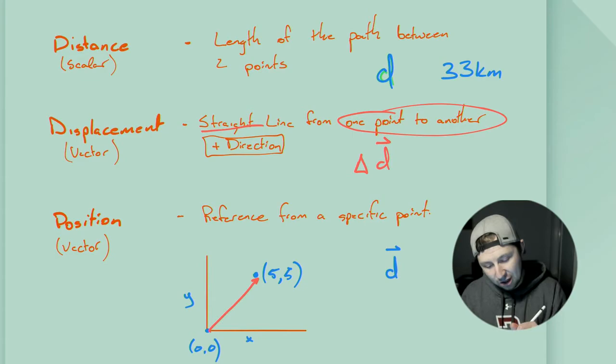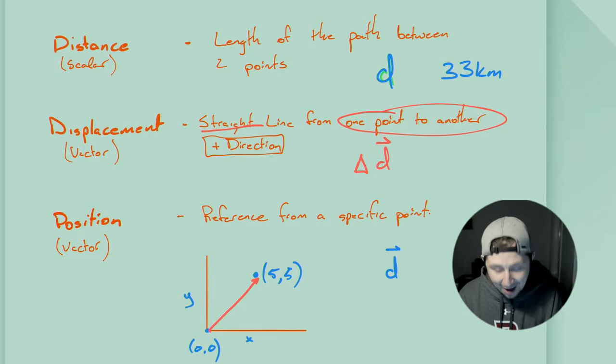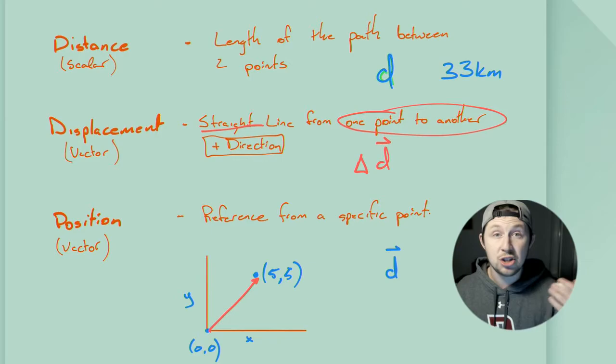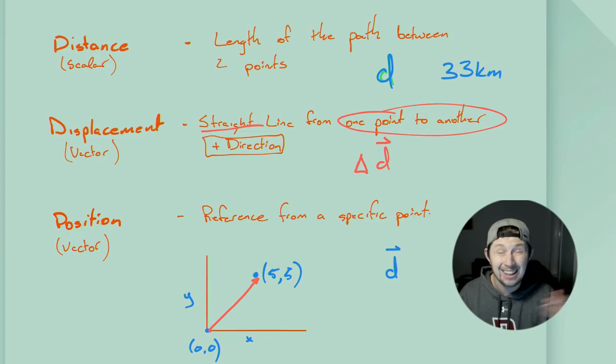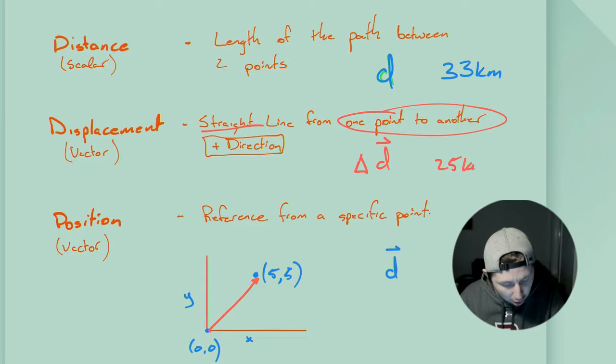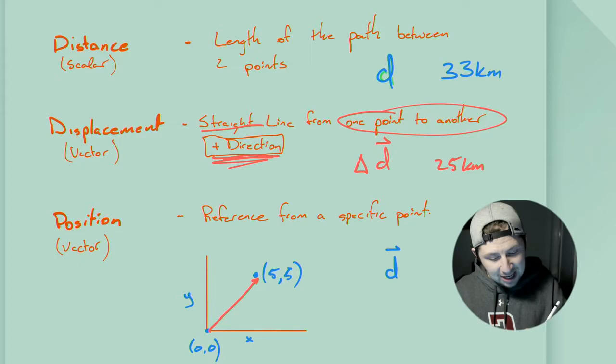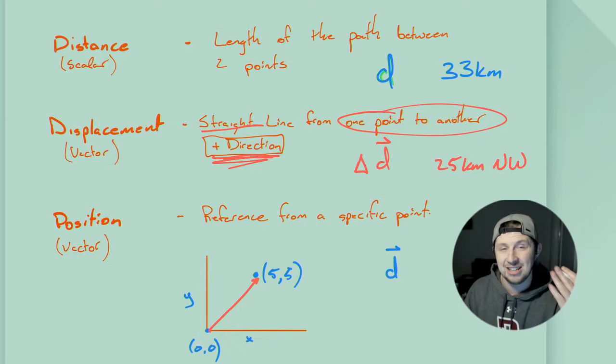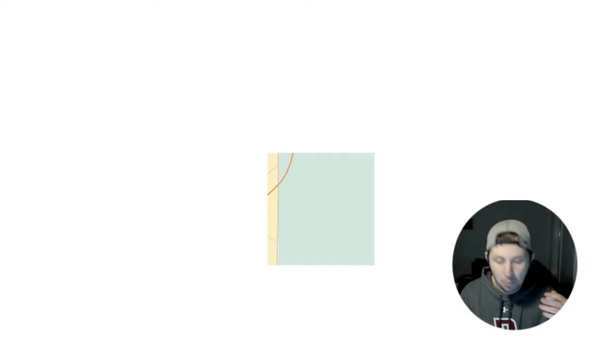Going back to my original example, the straight line from Cochrane to my house is the displacement. That change from 0,0 up to 5,5, or from my house to Cochrane, is roughly 25 kilometers — but we also need a direction attached to it, so we would say 25 kilometers northwest. There are a bunch of ways we can indicate direction, and we'll talk about that with the problems we're going to do.